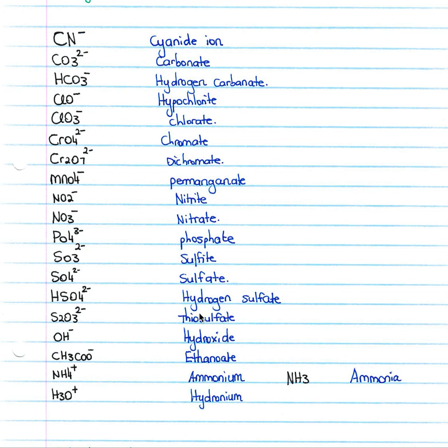Your hydrogen sulfate is simply with a hydrogen in the front, HSO4 2-. Thiosulfate is S2O3 2-. Hydroxide we will know from our acids base reactions is OH minus. CH3COO minus is ethanoate. NH4 plus is ammonium. Your hydronium you'll know from acids and bases is H3O plus and your ammonia is NH3.